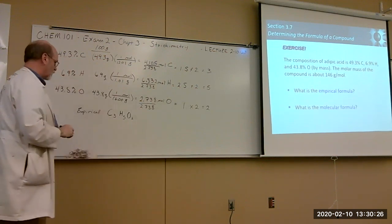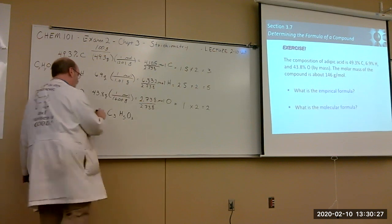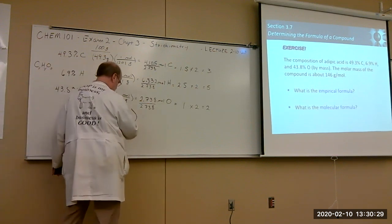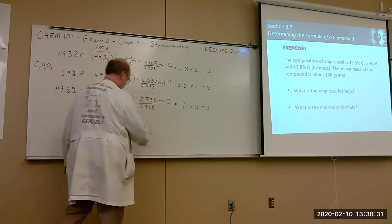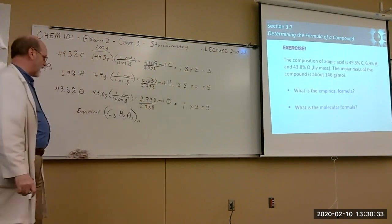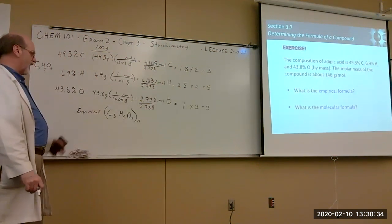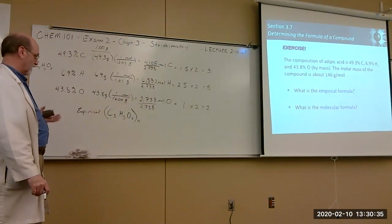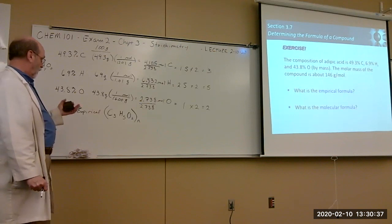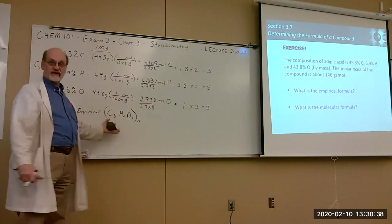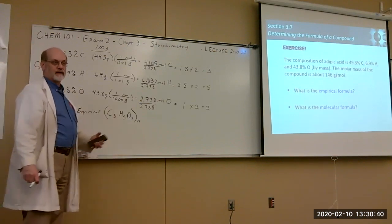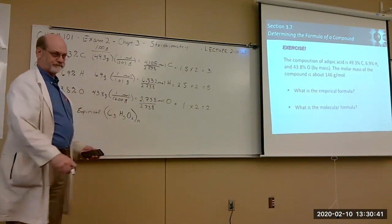After multiplying through by 2, we get C₃H₅O₂ as our empirical formula.